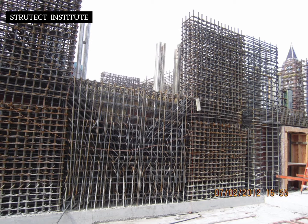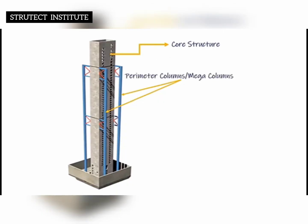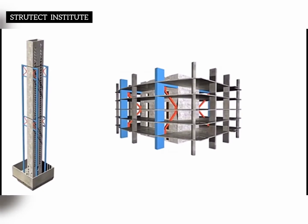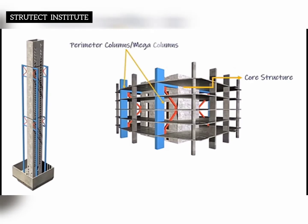Another structural system is the Core and Outrigger Structural System. In structural engineering, the outrigger structural system is an interior lateral load-resisting system located within the interior of the building. It consists of core structures connected to the perimeter columns of the building by means of structural members called outriggers.